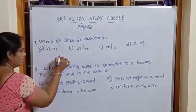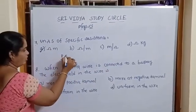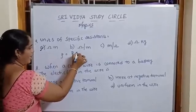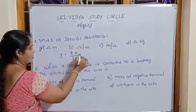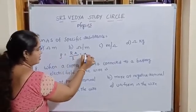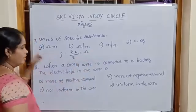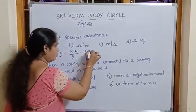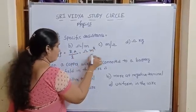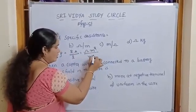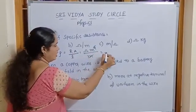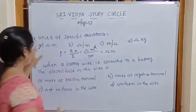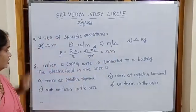Next, specific resistance is denoted by rho. Rho is equal to formula R times A by L. R is resistance in Ohm. Area is meter square. Length is meter. Meter cancel, we get Ohm meter. Then option A is correct.